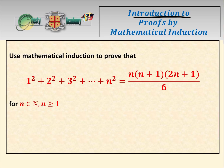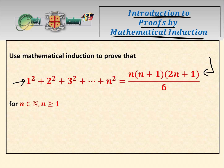Welcome to the introduction to proofs by mathematical induction. In this video we're going to go nice and slowly and prove by mathematical induction that the sum of the first n square numbers is equal to n(n+1)(2n+1) over 6, for n in the natural numbers, n greater than or equal to 1.